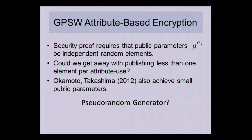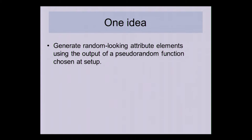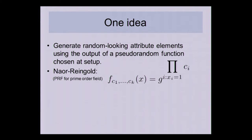We want to publish a smaller set of group elements that we might use to replace the independent random elements g^(a_i) currently in GPSW. The first idea that comes to mind is using a pseudorandom generator. Specifically, we could use the output of a pseudorandom function to generate random-looking attribute elements replacing the original independent random elements g^(a_i). If we look at the Naor-Reingold PRF for prime order fields, how this works is you have a small number of random exponents c_1 through c_k, and the output is defined to be a subset product of these exponents in the exponent of g, where the exact subset is determined by the input x.